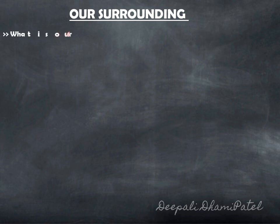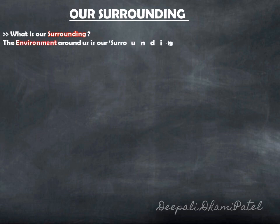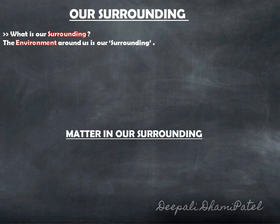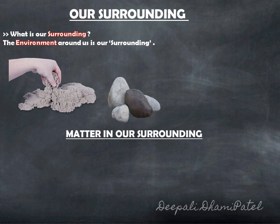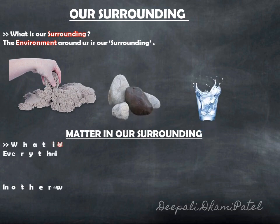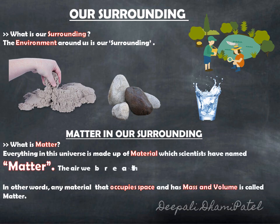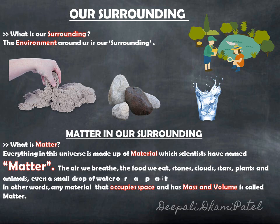Our surrounding. So now, can you all tell me what is our surrounding? Our surrounding is anything which is around us — the environment around us is our surrounding. And what is this surrounding made up of? This surrounding is made up of material like sand, stones, water and trees, air, food — everything around us is material. The scientists who were very curious to know what this surrounding is made up of termed these materials and substances as matter.